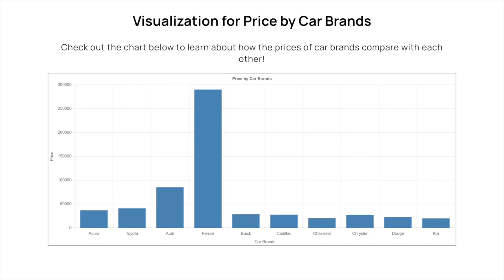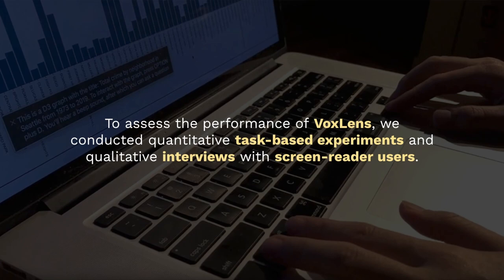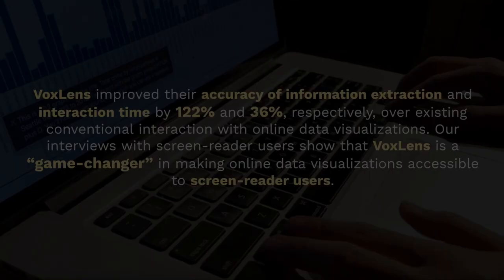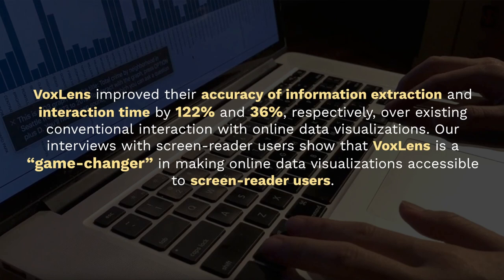Finally, the user can also listen to the sonification or the audio graph. To assess the performance of Voxlens, we conducted quantitative task-based experiments and qualitative interviews with screen reader users. Voxlens improved accuracy of information extraction and interaction time by 122 percent and 36 percent respectively over existing conventional interaction with online data visualizations.